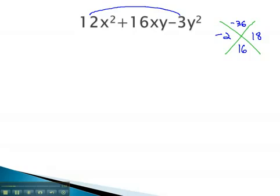We're now ready to factor this problem. Using FOIL as a guide, the F comes from the first, 12x squared. You may notice there are several ways to multiply to 12x squared. One way might be 12x times x.